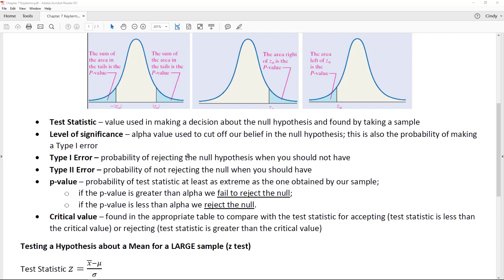A Type II error is the probability of not rejecting the null when you should have. In other words, maybe every bag of chips you got, they put the amount they said they were going to, but again, maybe you just got a good sample.